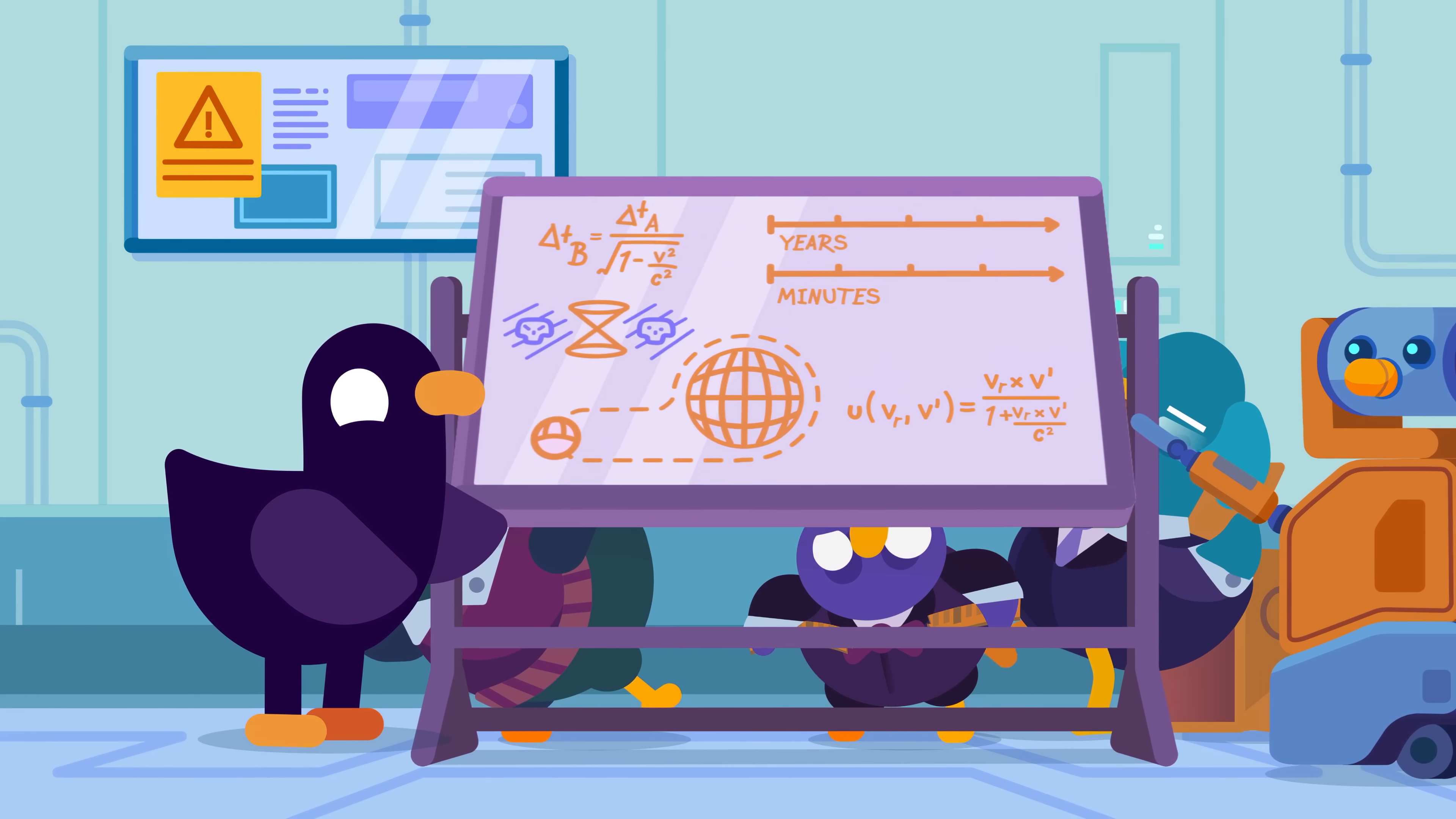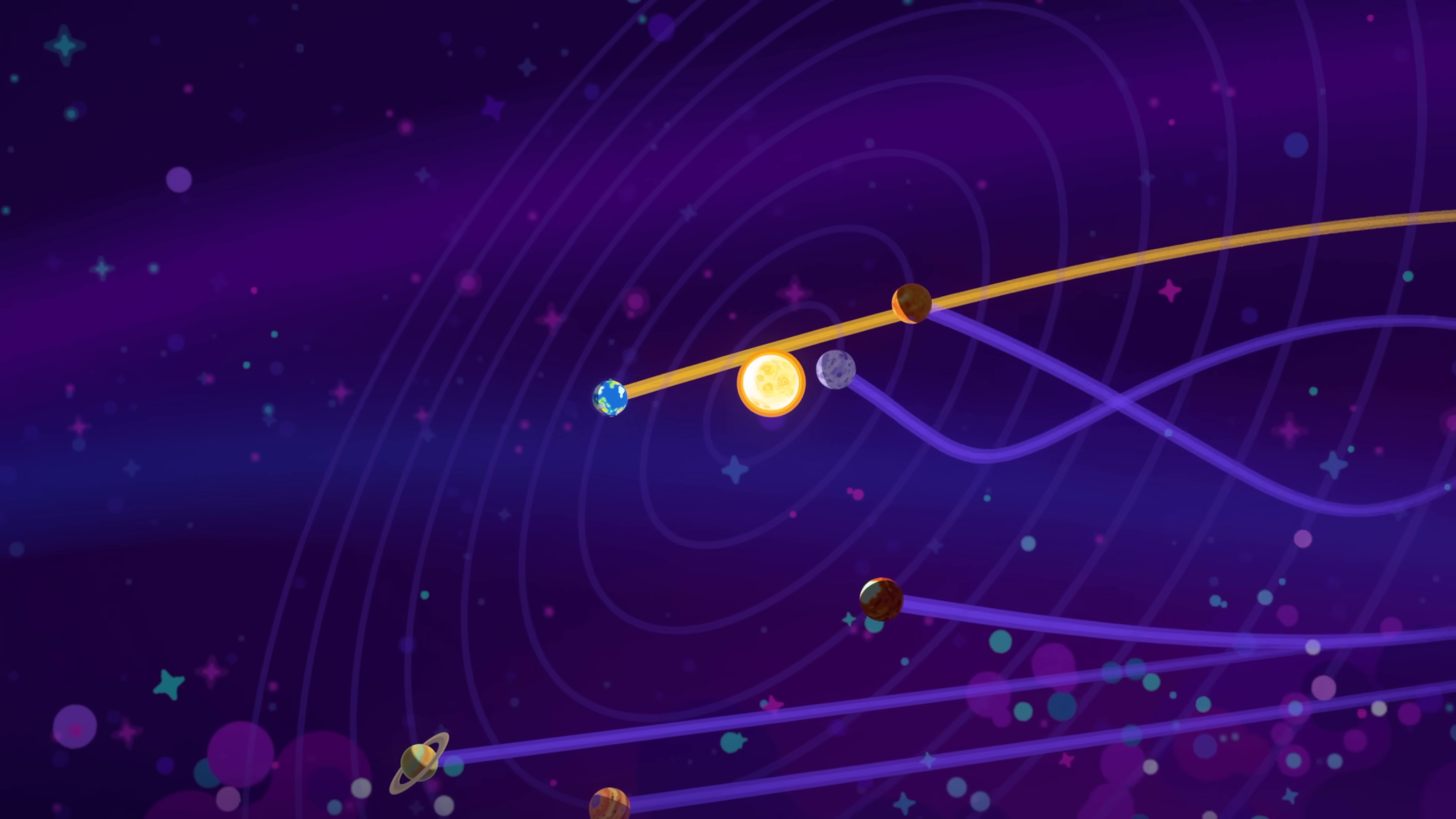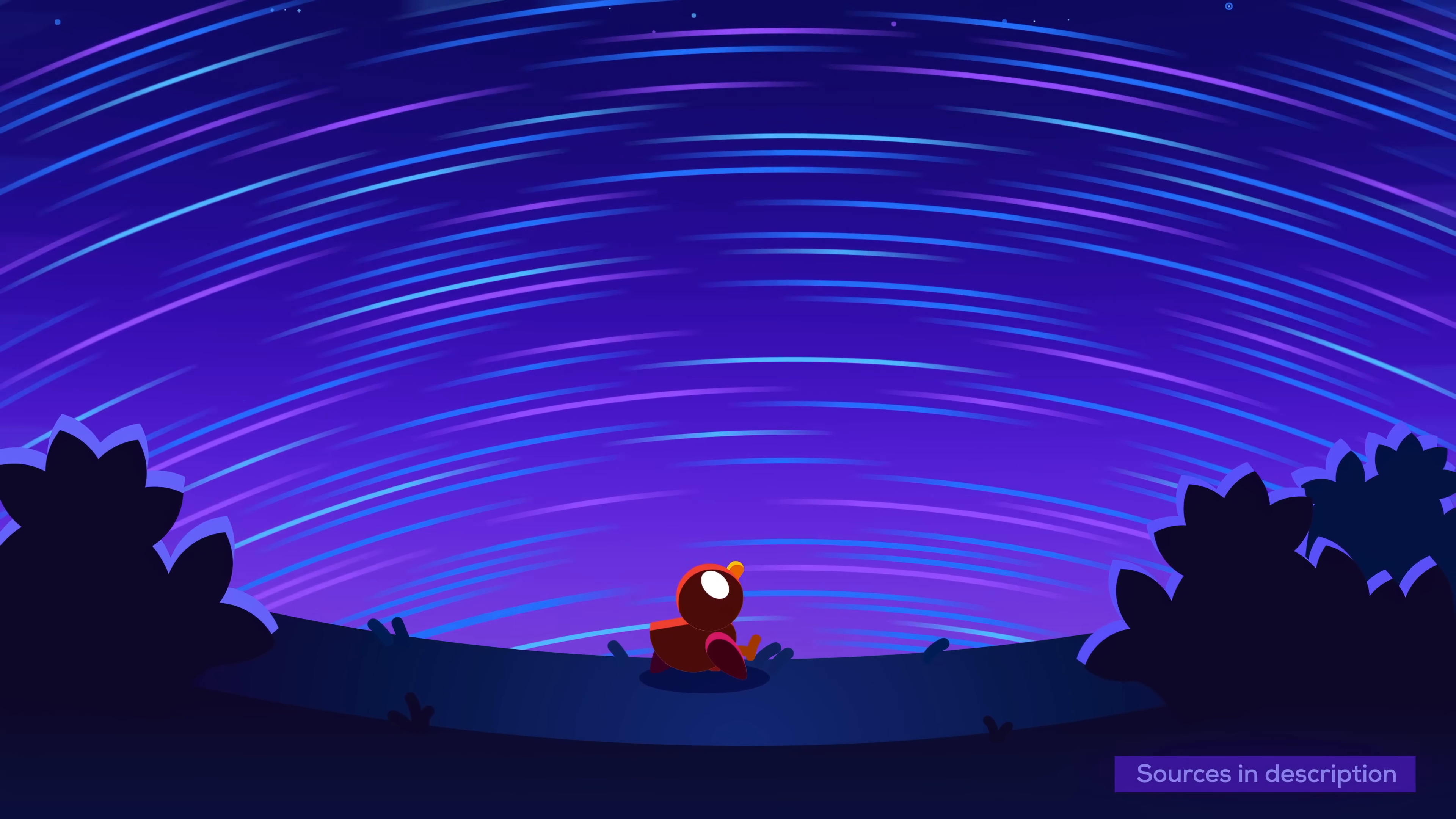Remember, we're telling a science story here. In real life, things are more complicated. For one, it's impossible to truly stand still relative to space itself. You can only be standing still relative to other things in space. And you can't really define a reference frame for photons as we just did. For details, check out our sources. But now, back to our story.